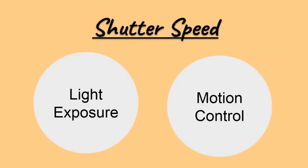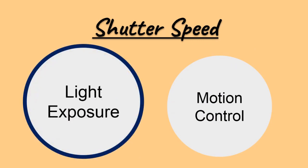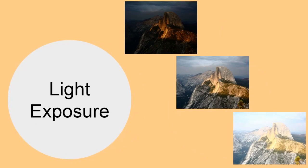Let's break down shutter speed into two parts: light exposure and motion control. So let's begin and go over the first part, light exposure. How does shutter speed help with varying brightness in a photograph?